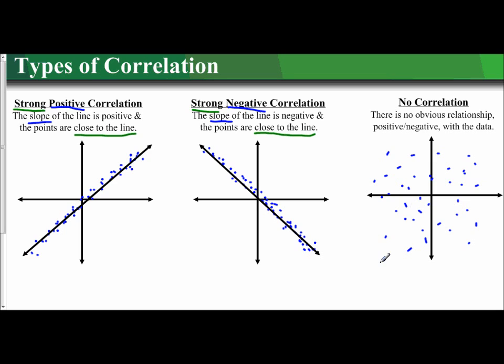I cannot draw a line. They do not form a positive line. They do not resemble it. They don't resemble a negative line. There is no obvious relationship. So that is a no correlation.